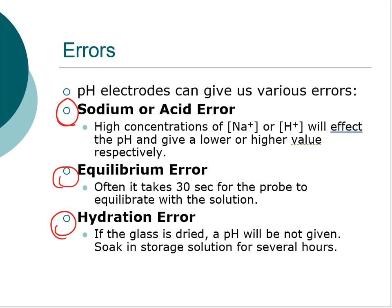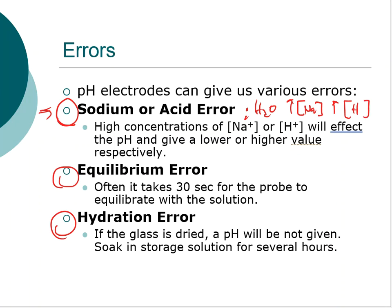Let's start with the sodium and acid error. When using pH probes in a real working laboratory, there will be times we need to obtain the pH of a liquid solution. The problem here is that those aqueous solutions can have very high concentrations of sodium or very high concentrations of hydrogen, and either one of these can cause a problem with the pH probe.